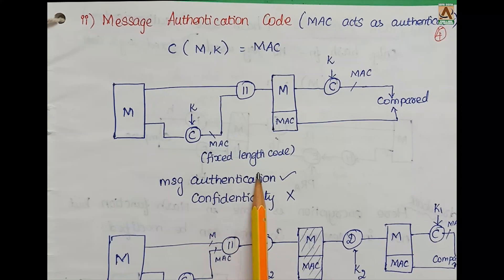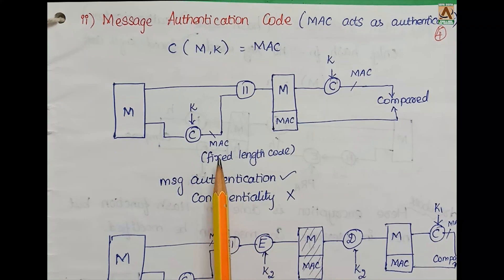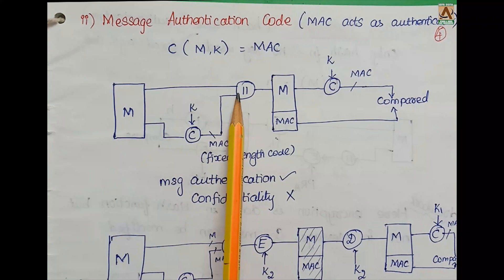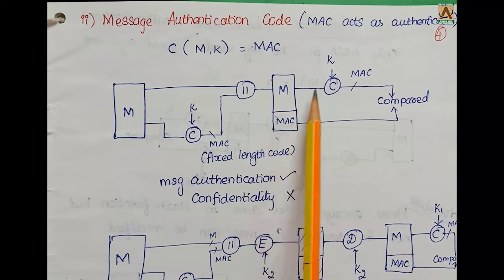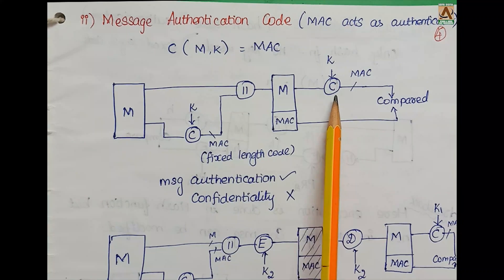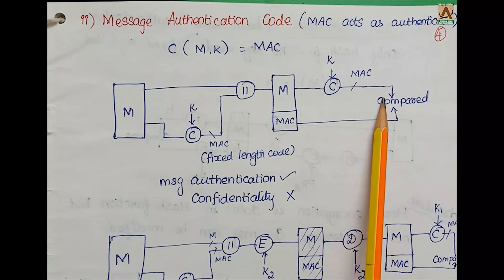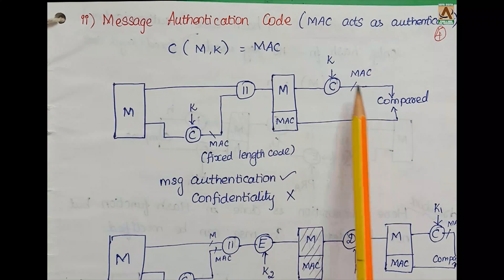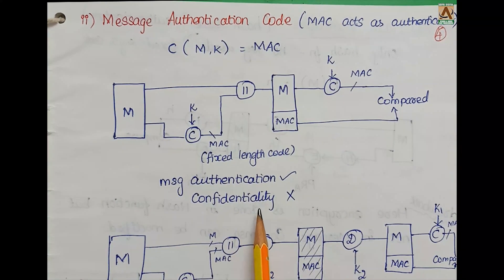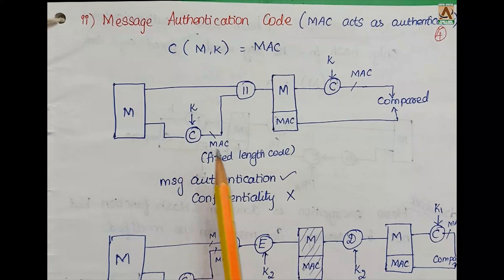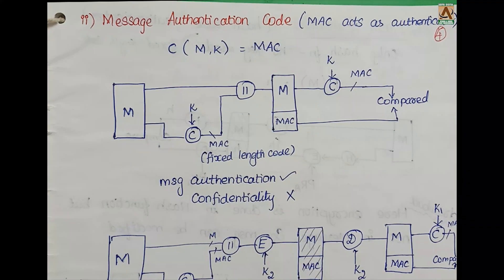The MAC code is a fixed-length code. The message and MAC are appended together, and the MAC function is applied again to regenerate a MAC code for comparison to achieve authentication. However, there is a drawback: confidentiality fails because the same shared secret key is used by both parties, so security of confidentiality is not ensured.